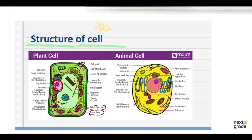There is also an amyloplast or starch grain, mitochondria, and the whole greenish part is the cytoplasm. Looking at the animal cell, we can see mitochondria, Golgi apparatus, nucleolus and nucleus, centrioles, microtubules, ribosomes, the plasma membrane, and both smooth and rough endoplasmic reticulum.